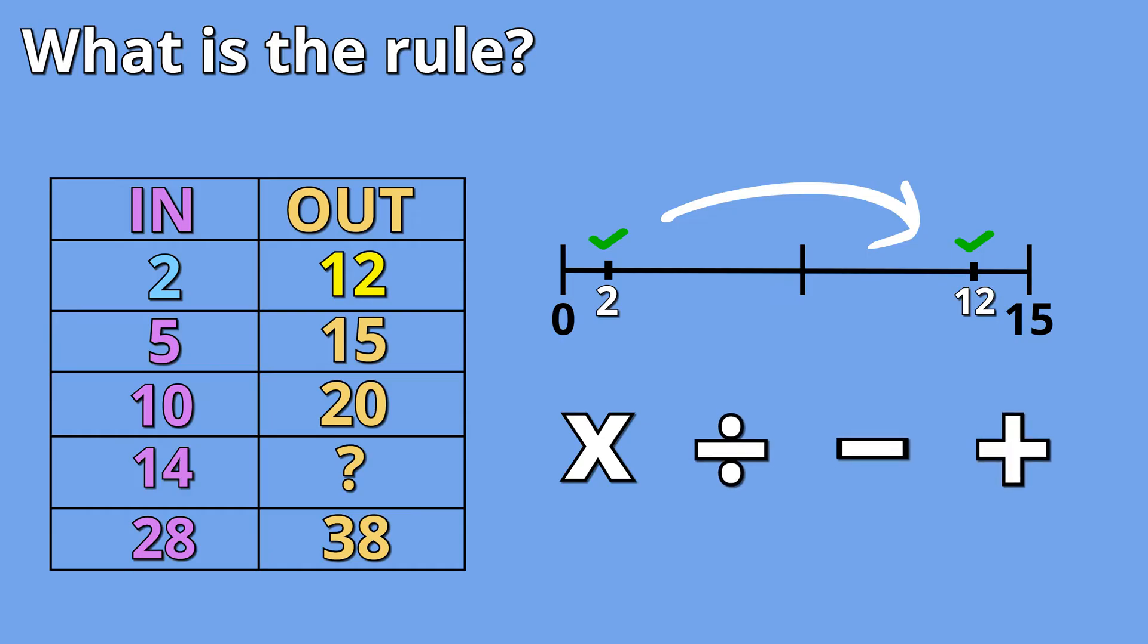The two operations that make numbers larger are multiplication and addition. If I multiply any whole number by another whole number it will only get larger. Same goes with addition. If I start off with a number and add any positive whole number to it, it will always increase in value.